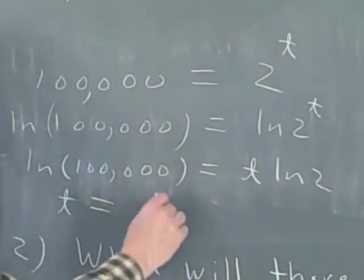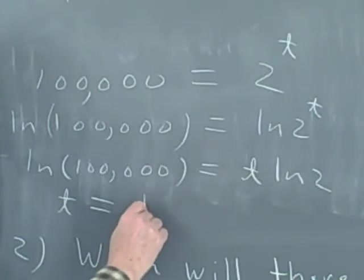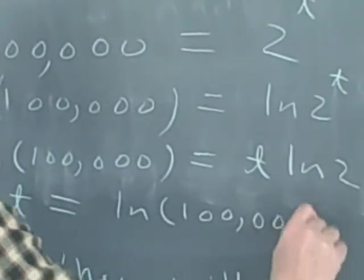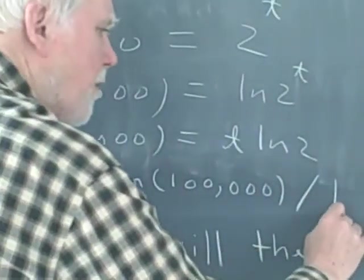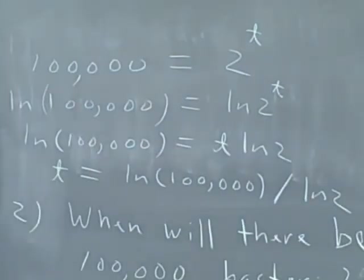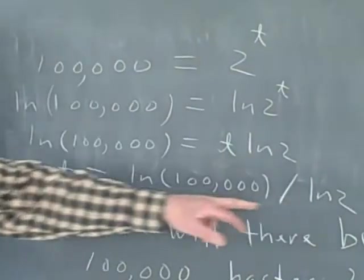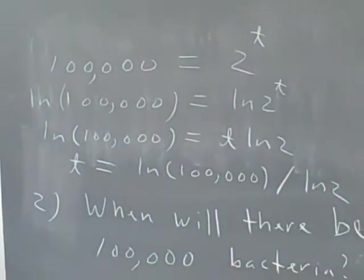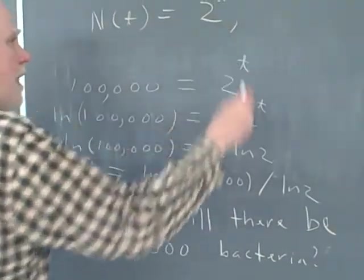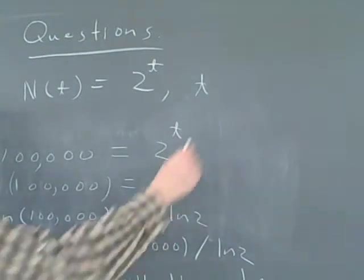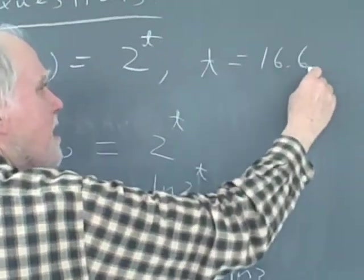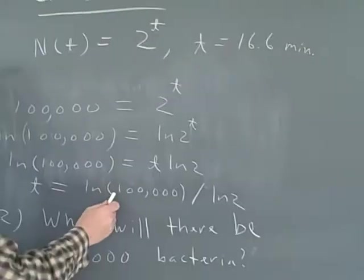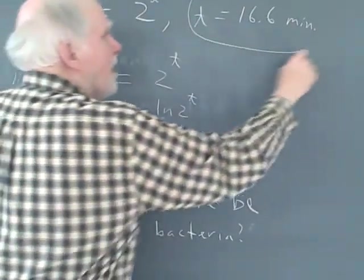And t comes out to the log of 100,000 divided by ln 2. That's how long it takes. That's how many minutes right there. The log of 100,000 divided by the log of 2. These numbers are in your calculator. The time when you put it in your calculator will be 16.6 minutes. That's the log of 100,000 over the log of 2.